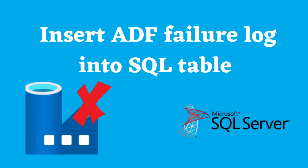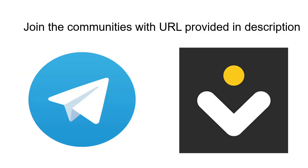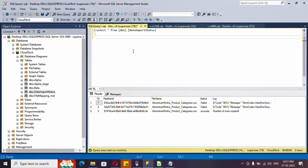Hello everyone. In this video we are going to log the failure or success of a copy activity into our SQL table. If you are new to our channel, hit subscribe — your subscription will motivate me to produce more videos in better quality. The SQL scripts, source file, and ARM template for this video will be shared to the Telegram and NAS IO community. Please join with the URL provided in the video description. First, let's see what the acceptance criteria is.